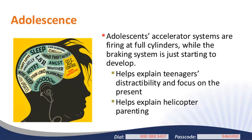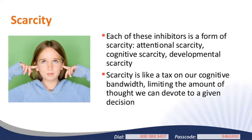Teenagers aren't always the best at making decisions that require long-term consideration and planning—there's a neurological basis for this. Adolescents' impulsive systems are firing at full cylinders while their logical, contemplative systems are just beginning to develop. This helps explain teenagers' tendency to live in the moment and sheds light on the helicopter parent phenomenon. As the choices adolescents face grow in complexity—like where to go to college—parents implicitly recognize their child may not make informed decisions if left to their own devices, and so they step in increasingly to help. Each of the inhibitors I've discussed can be thought of as a form of scarcity: attentional, cognitive, or developmental scarcity—like a tax on your cognitive bandwidth.